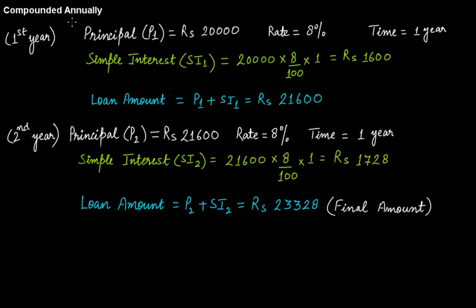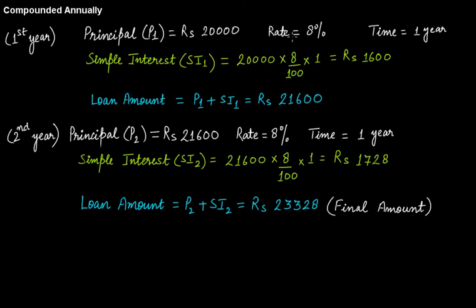When the interest rate is compounded annually, it takes a period of one year to calculate the interest. So for the first year, your principal is 20,000 — the loan you took from the bank — at a rate of 8% for one year. The interest, using the simple interest formula P × R × T, works out to rupees 1,600.